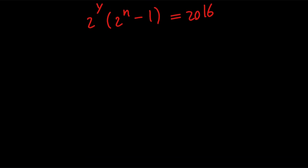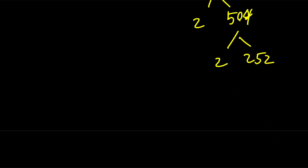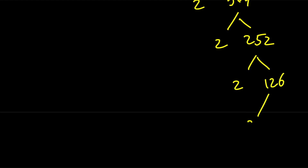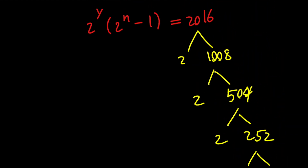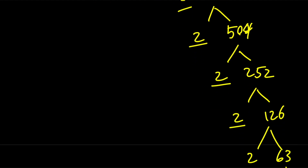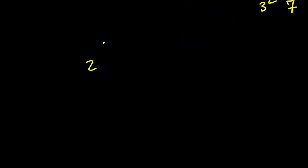Next, let's factor 2016. 2016 is 2 times 1008; 1008 is 2 times 504; 504 is 2 times 252; 252 is 2 times 126; 126 is 2 times 63; and 63 is 9 times 7, which is 3 squared times 7. So 2016 equals 2 to the power of 5 times 3 squared times 7. Therefore, 2 to the power of y times the quantity 2 to the power of n minus 1 equals 2 to the power of 5 times 3 squared times 7.